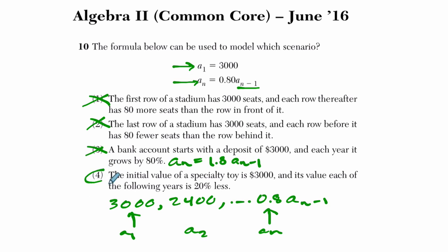Now what we have here, the initial value of a specialty toy is 3,000 and its value each of the following years is 20% less, or 20% less is just 80% of what it was before. And you can see that happening here. We lose 20% of 3,000, we get 2,400, right? Because 20% of 3,000 is 600 and we're losing value, the toy's worth less over time.